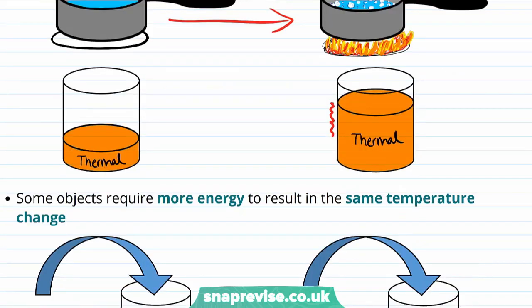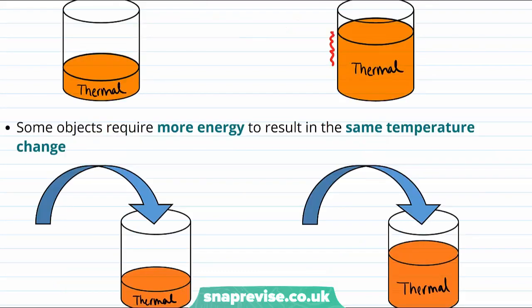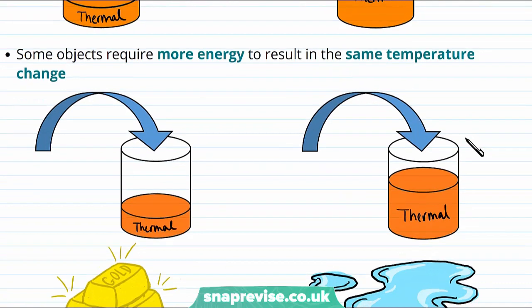Now, let's say that you've decided how much you want to raise the temperature of some material. It turns out that the amount of energy that you need to give the material depends on what the material is made of. Some objects might require more energy to result in the same temperature change as other objects.